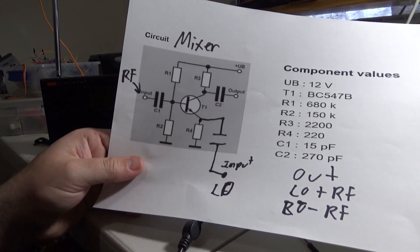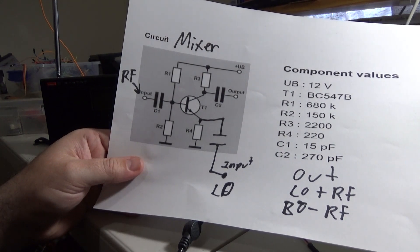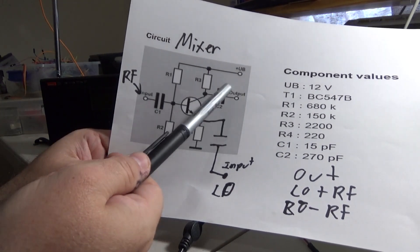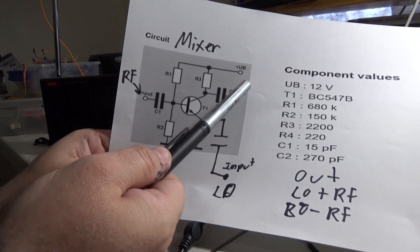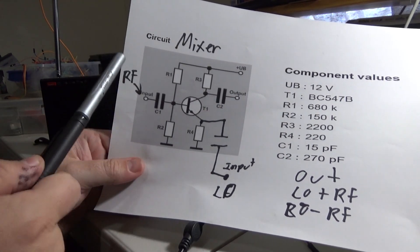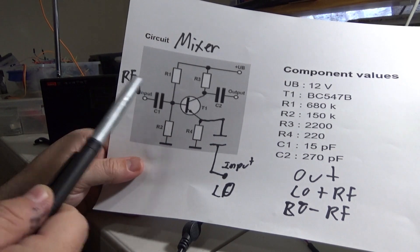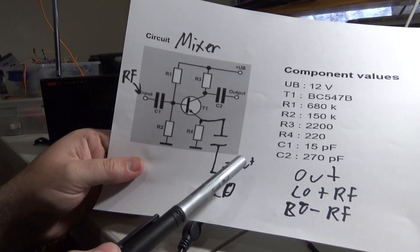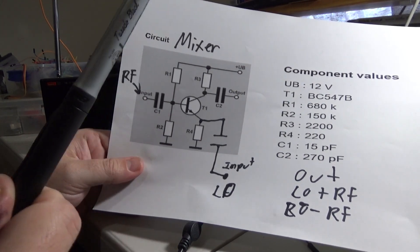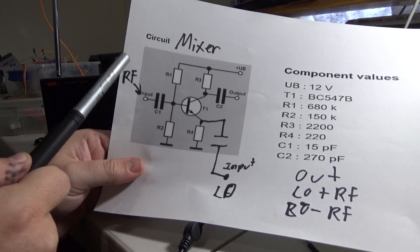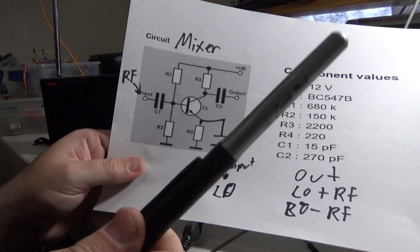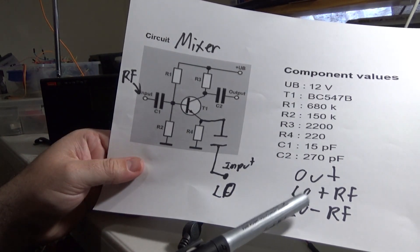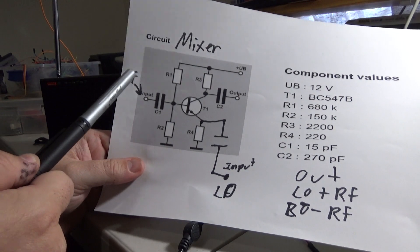Now, the interesting thing about the output is the output contains more frequencies than what you added in originally. The output will contain a frequency which is the sum of the local oscillator and the RF input, as well as the subtraction of the local oscillator and the RF input.